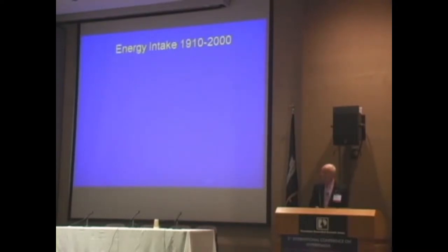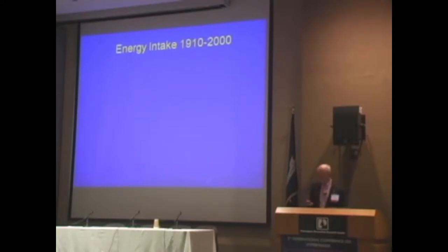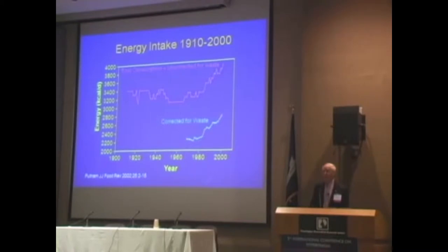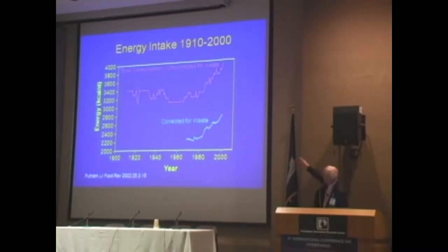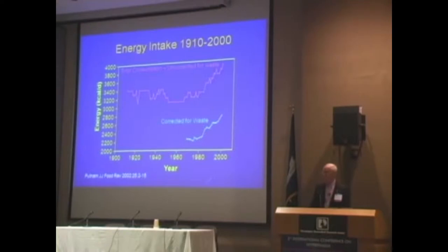The food available in the United States for consumption, which is what farmers grow, has been measured by the Department of Agriculture over the last century. For most of that century up to 1980, it was fairly constant — with some ups and downs during wartime and the Depression — but from about 1910 onward up to 1980, it was something like 3,400 calories a day, give or take a little bit. So farmers were producing a reasonably constant amount of food per individual.